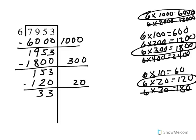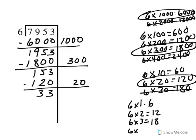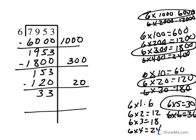Now I can still subtract groups of 6 from 33, so I need to write my multiplication facts by 1s. 6 times 1 is 6, 6 times 2 is 12, 6 times 3 is 18, 6 times 4 is 24, 6 times 5 is 30, and 6 times 6 is 36. So 36 is too much, but I can subtract 30. So I want to subtract 5 groups of 6, which is 30. 3 minus 0 is 3, and 3 minus 3 is 0. Now I've got 3 left, and since my divisor is 6, I cannot take away another group of 6.